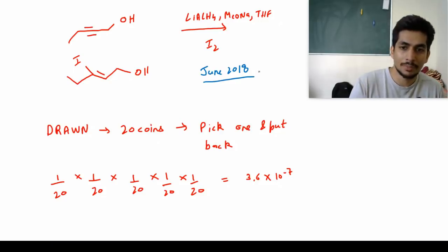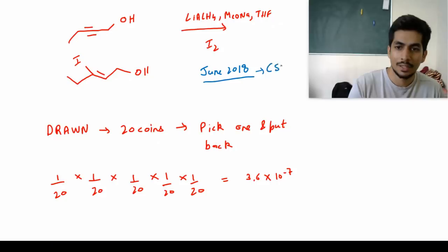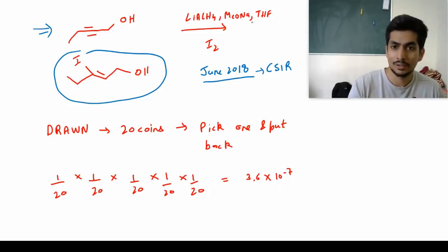This first question was a repeat question from June 2018 CSIR NET exam. This was a propanediol alcohol given to us, and the product we're going to get is this one in presence of lithium aluminum hydride, sodium ethoxide, PBr3, and then addition of I2.